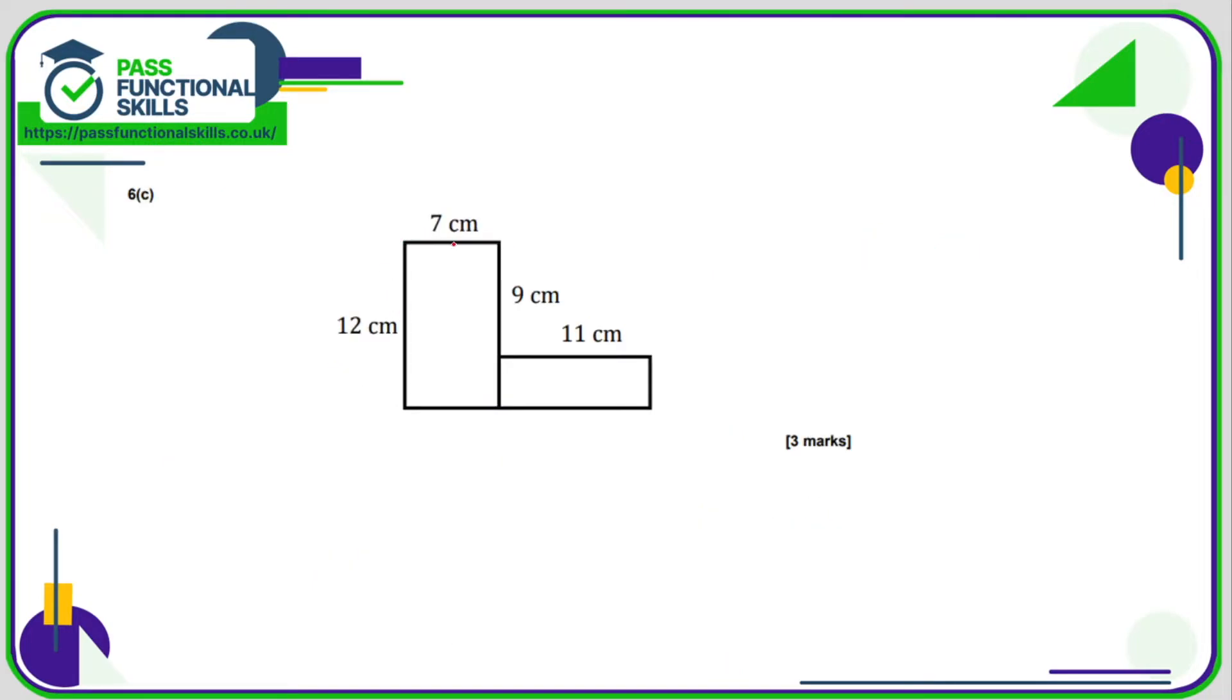For C, 7 times 12, that is 84. And here we've got an 11 by, we're not sure, but we know it's 9 from here to here and 12 from here to here. So this must be 3, 11 3s are 33, and 33 plus 84 comes to 117 square centimetres.